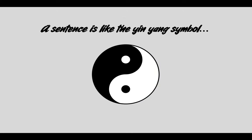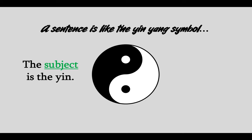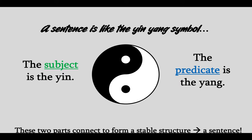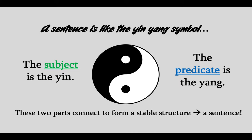A sentence is like the yin-yang symbol. The subject is the yin and the predicate is the yang. These two parts connect to form a stable structure — a sentence.